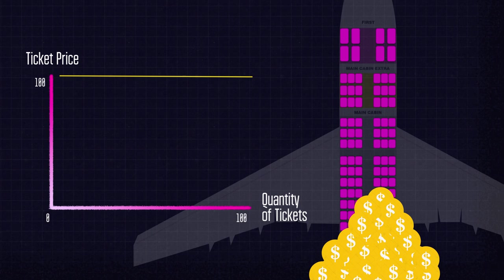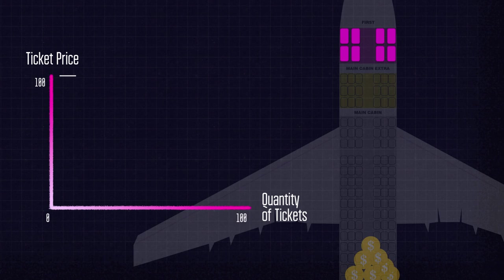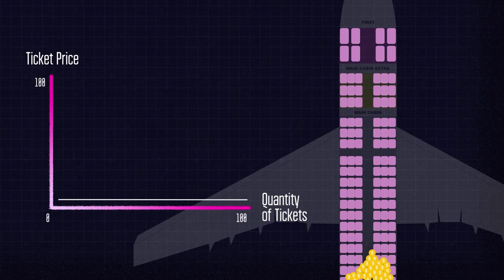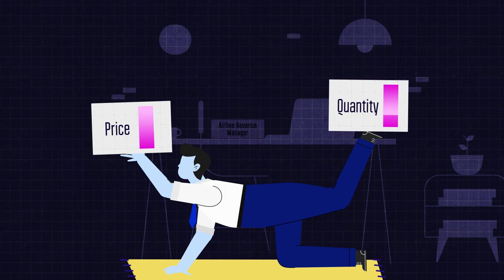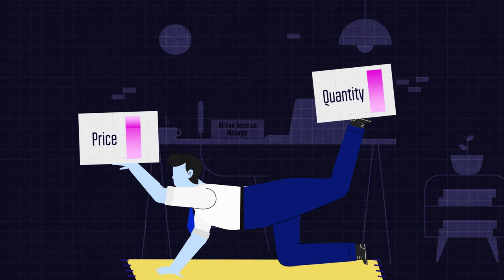It's inefficient if an aircraft takes off almost empty with a couple of expensive tickets sold. And it's also inefficient to occupy the entire aircraft, but for the lowest cost per seat. That's why airline revenue managers engage in a balancing act between finding the highest price and filling as many seats as possible.